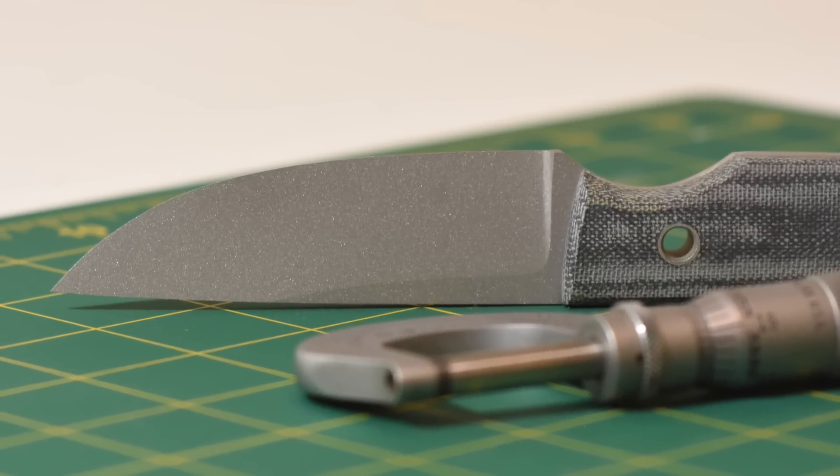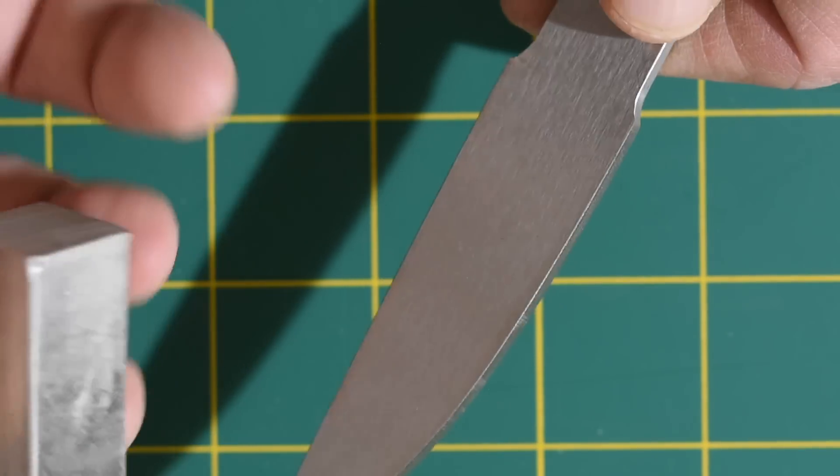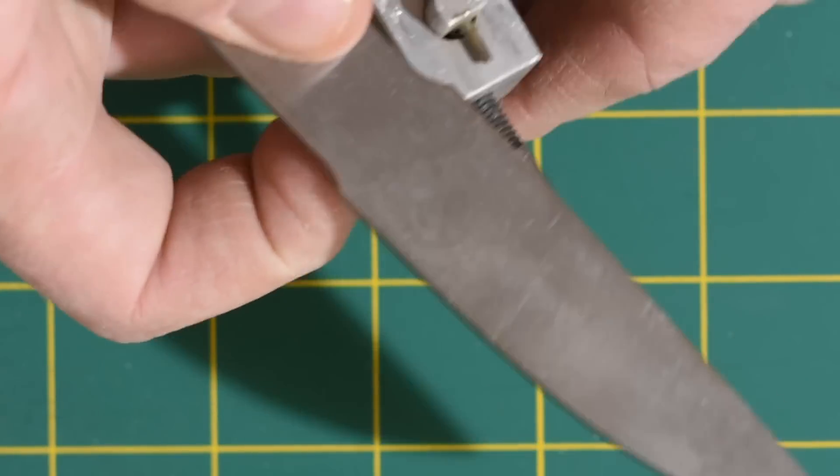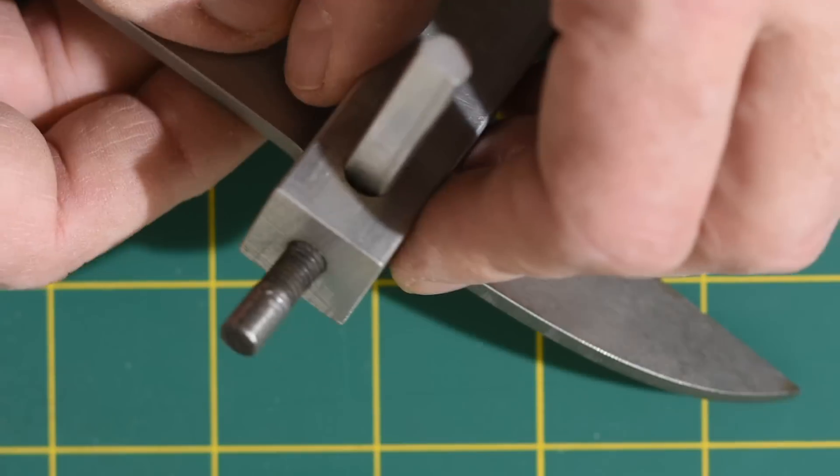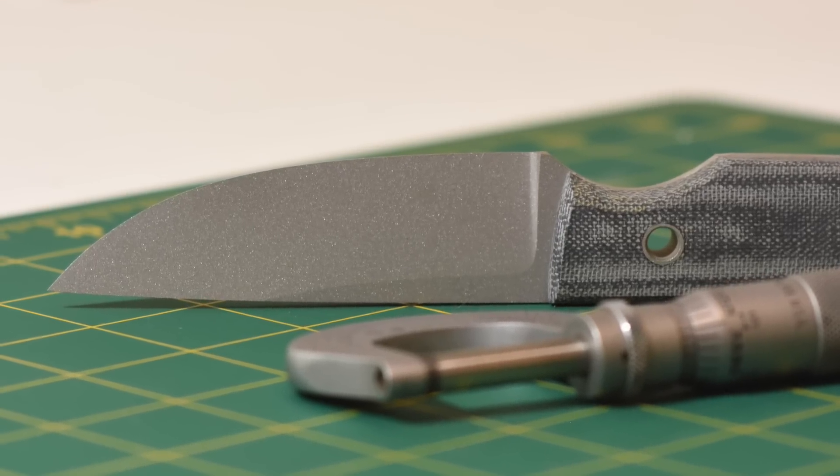As knife makers, we always start with some piece of material that's not sharp and we have to make it sharp by grinding, filing, forging, or milling.